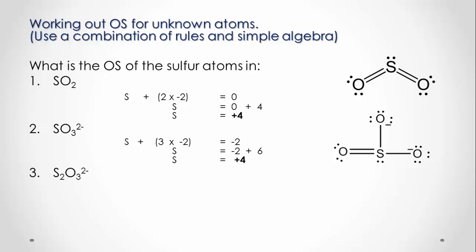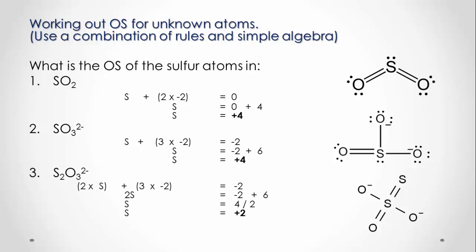The third example is the thiosulfate ion. There are two sulfur atoms and three oxygen atoms, and the sum of the oxidation states adds to give the charge of negative two. Solving the algebraic expression gives sulfur an oxidation state of positive two. Make sure you take into account the two sulfur atoms in your calculation.